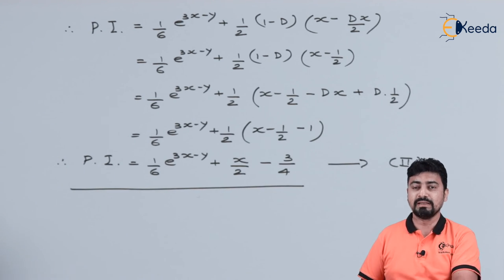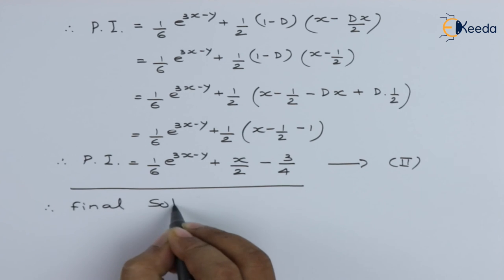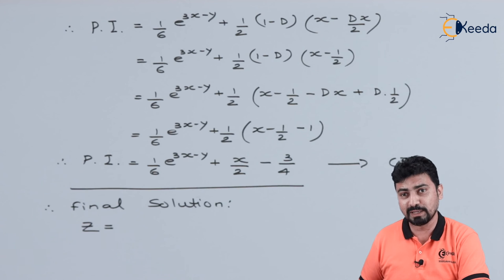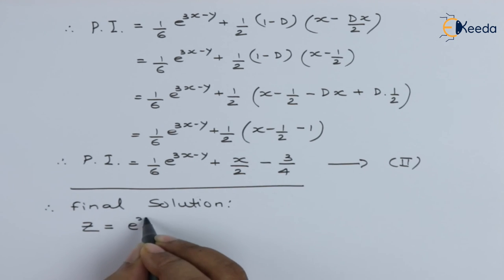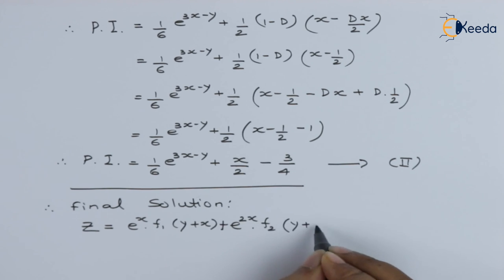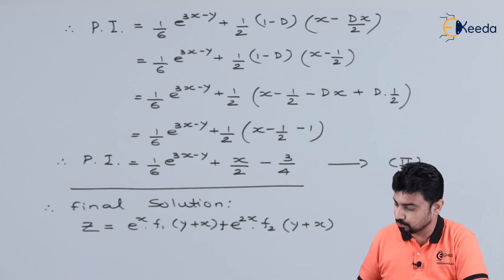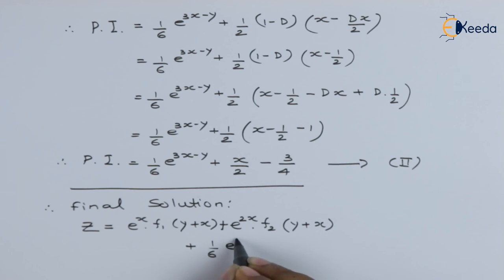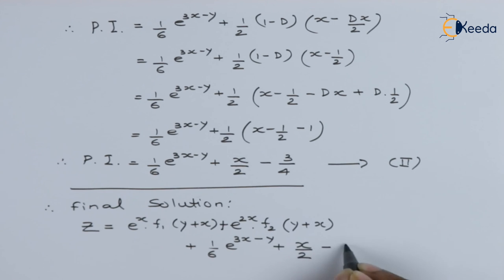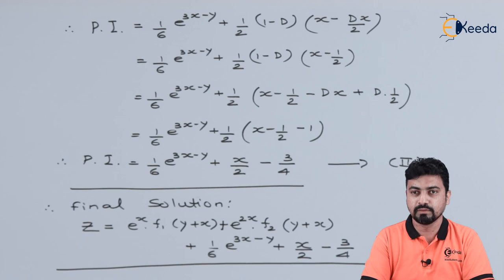This is the second part of our final solution. Therefore, the final solution is z = CF + PI, combining the two terms of the complementary function with the particular integral we found. This is the complete solution for the given non-homogeneous linear partial differential equation with constant coefficients. Thank you for watching; stay tuned with eKIDA and subscribe.